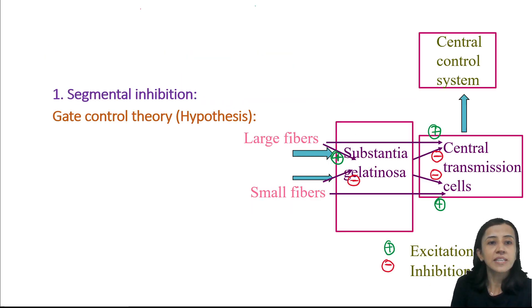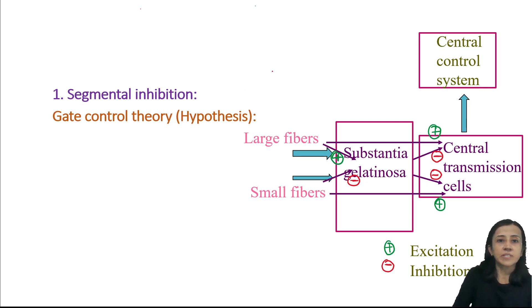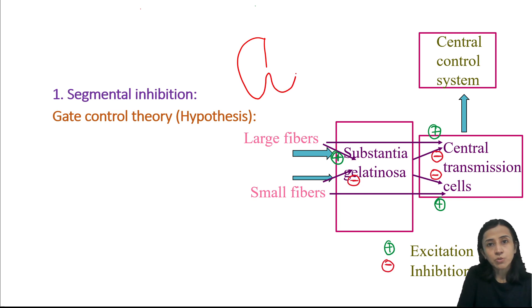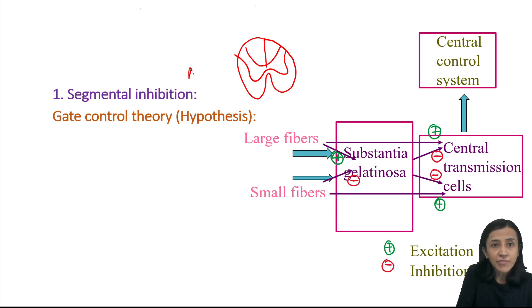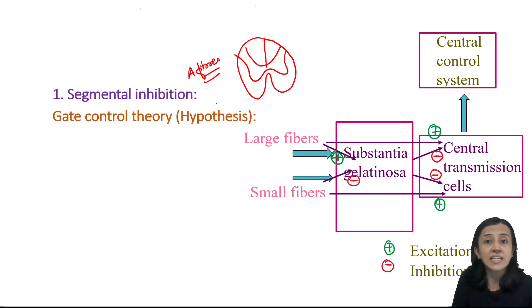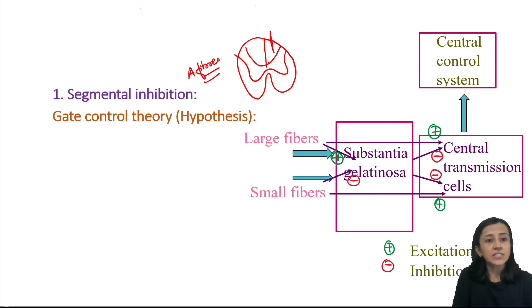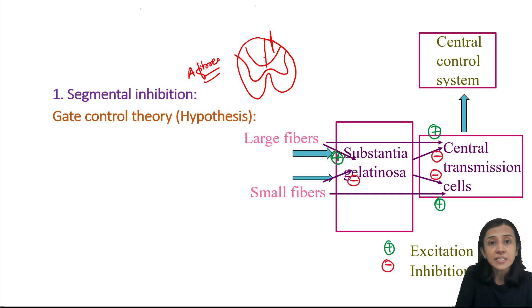First is segmental inhibition or spinal pain suppression system. For example, through the spinal cord, various nerve fibers — ascending tracts — ascend upward. Group A fibers are for touch or proprioceptors, also called dorsal column fibers. When they are stimulated, they activate segmental collaterals, and these segmental collaterals cause presynaptic inhibition of the pain fibers.